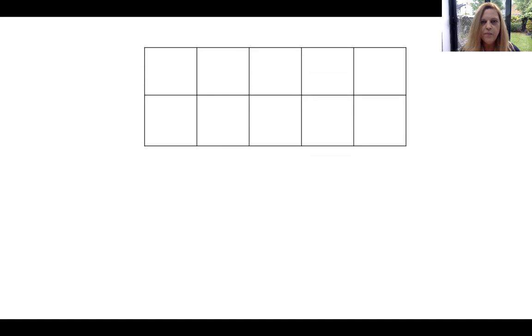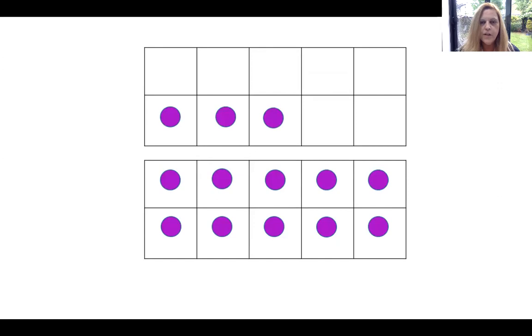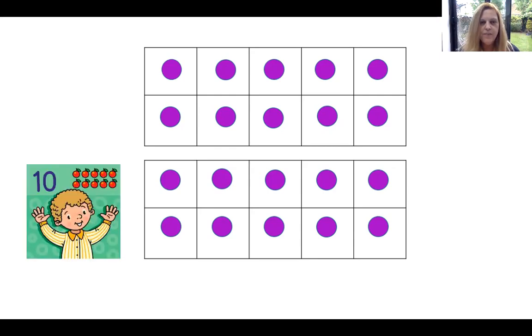And here's our ten frame. And another ten frame. So we've got two ten frames. We're going to fill it up. So you're going to count with me. Ready? One, two, three, four, five, six, seven, eight, nine, ten, 11, 12, 13, 14, 15, 16, 17, 18, 19, 20. We have filled both ten frames up. Two ten frames when they're filled. Ten and ten makes 20. There's one ten and another ten.